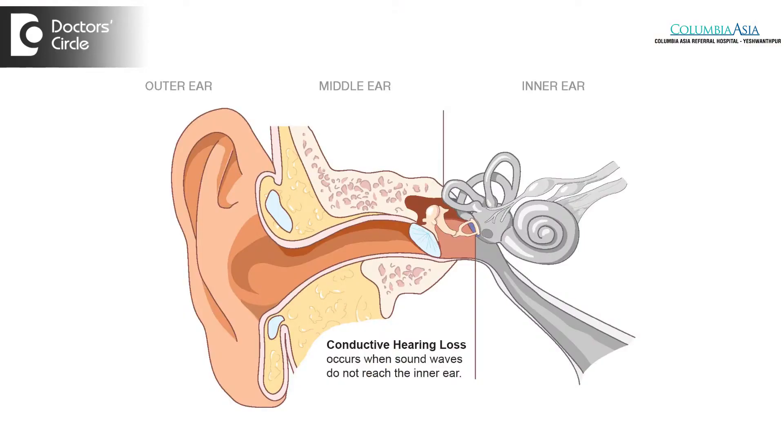Conductive hearing loss in a child would mean the problem is either in the ear canal, the eardrum, or the space behind the eardrum and between the eardrum and the cochlea, called the middle ear space.